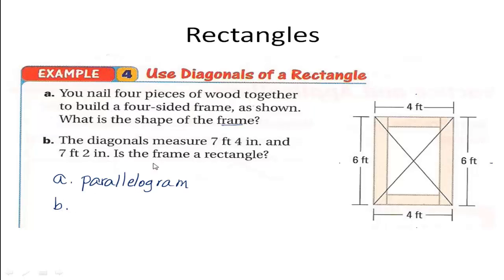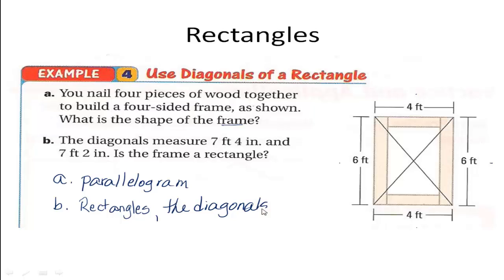Letter B says the diagonals measure 7 feet 4 inches and 7 feet 2 inches. So one diagonal measures 7'4" and the other 7'2". Is this frame a rectangle? We know that for rectangles the diagonals are congruent — they must measure the same thing. In this example, one diagonal measures differently from the other. Therefore, for letter B: no, it is not a rectangle.